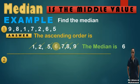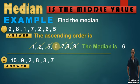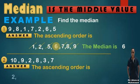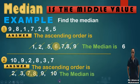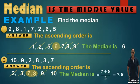Another example: if we have 10, 9, 2, 8, 3, and 7, arranged in ascending order: 2, 3, 7, 8, 9, 10. I cancel 2 with 10, and 3 with 9, leaving two middle numbers 7 and 8. Since I can't cross them both out, I take their average: the median = (7 + 8) / 2 = 7.5. This is the meaning of the median.